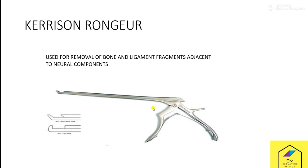The first instrument is the Kerrison rongeur. This rongeur is used for removal of bone and ligament fragments adjacent to neural components. These delicate and precise instruments are used for the removal of bone and ligament attached to neural components. For example, when laminectomy is performed — the procedure in which part of a vertebra is removed to create access to the spinal cord — the surgeon must remove vertebral column material. If these precise instruments are not used, there is a risk that nerve roots or nerve branches can be damaged.